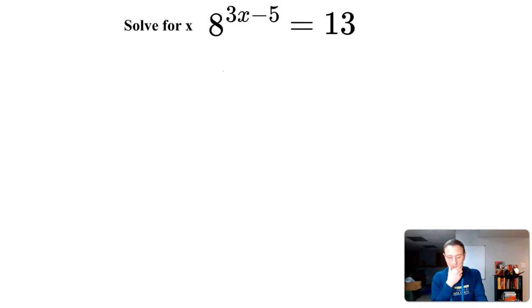Well, the first thing I'm noticing is 8. 8 is a power of 2, like 2^3 is 8. Well, in this scenario, this doesn't really help us. Because if I change 8 to 2^3, so I'd have (2^3)^(3x-5), I'd still be left with 13 over here.